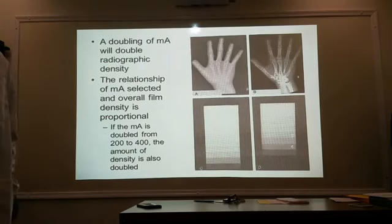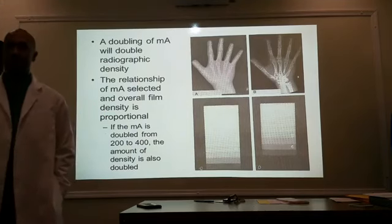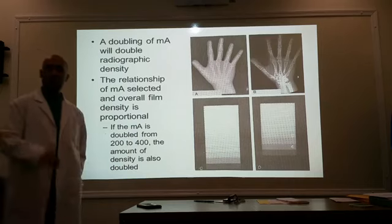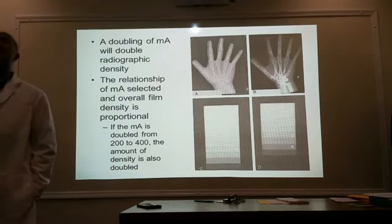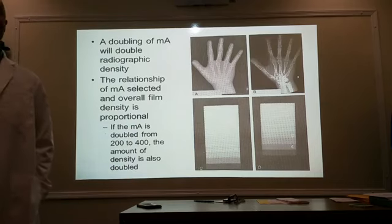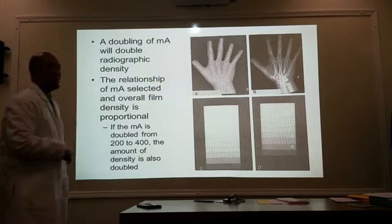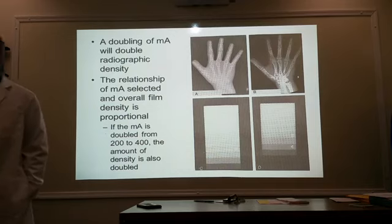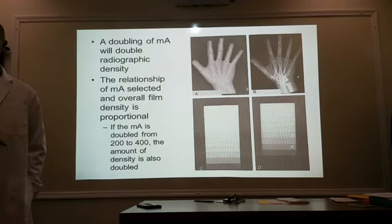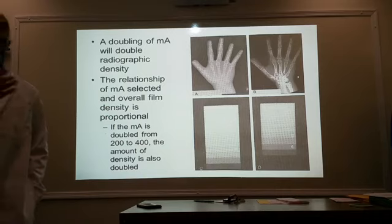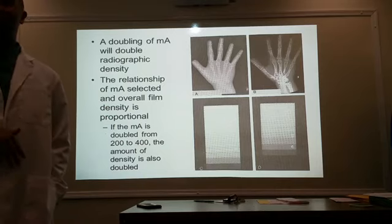Unlike kV, your adjustment in MA is proportional to the density you're trying to produce. So when you double your MA, you're also doubling your overall radiographic density. If I double my MA, it's going to be twice as dark. If I cut my MA by half, it's going to be half the density.